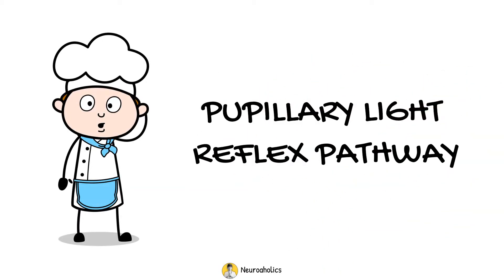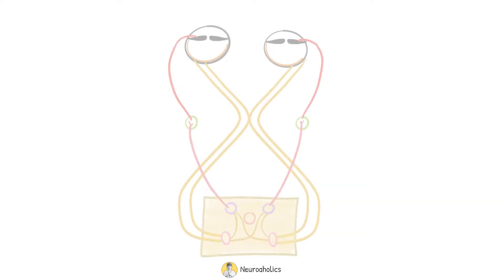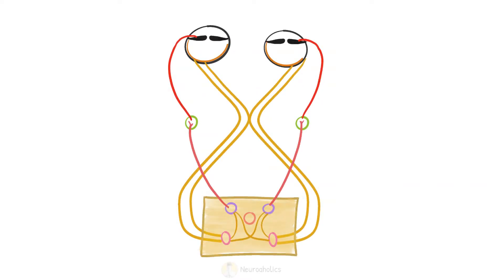Pupillary Light Reflex Pathway. When light is shown in one eye, both pupils constrict. Constriction of the pupil to which light is shown is called direct light reflex, and that of the other pupil is called consensual or indirect light reflex.